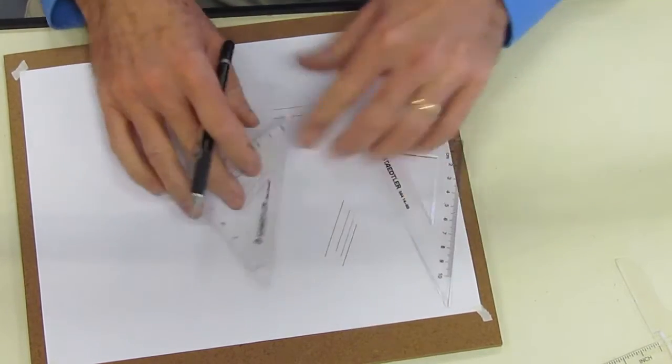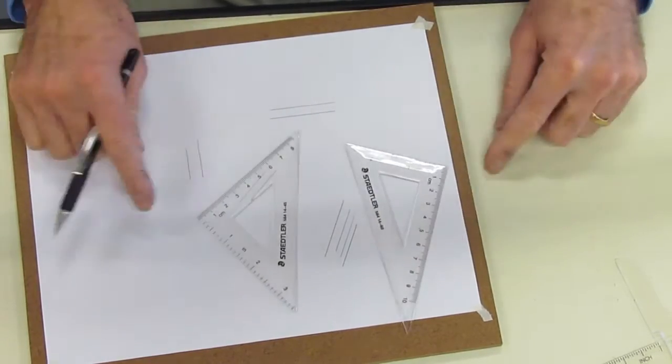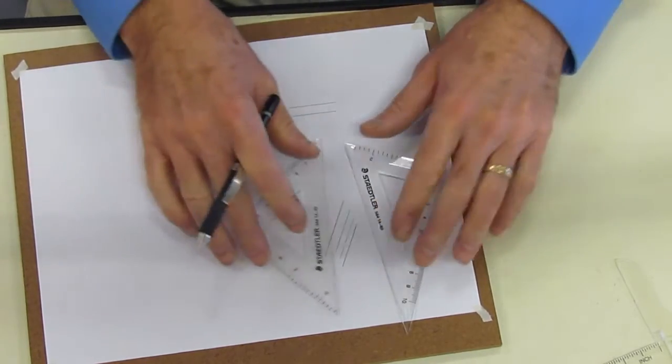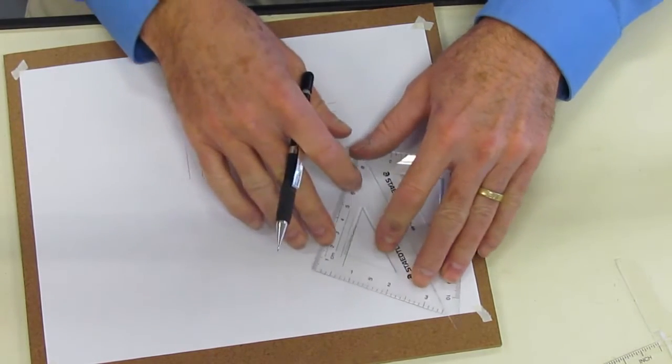So, to quickly review, I have a line, I take my triangles, I put them big side to big side, hippopotamus to hippopotamus, or hypotenuse to hypotenuse.